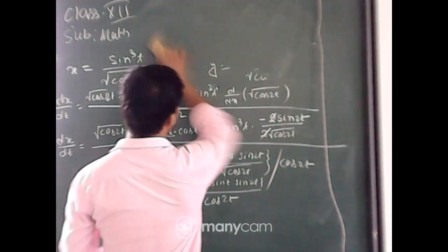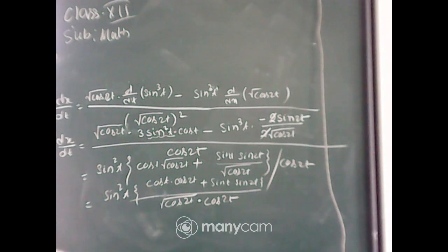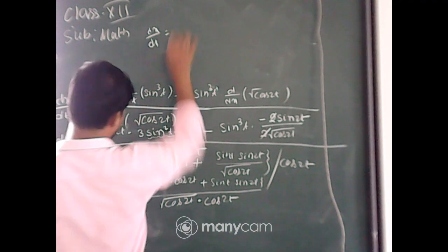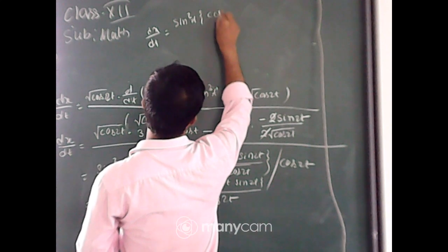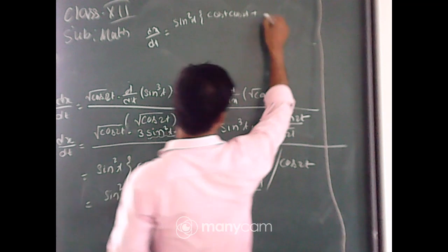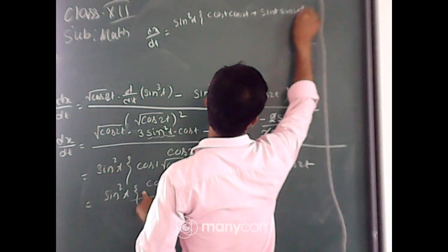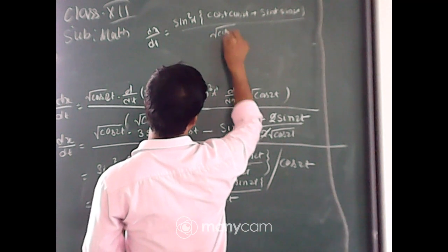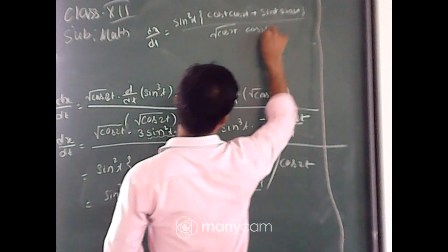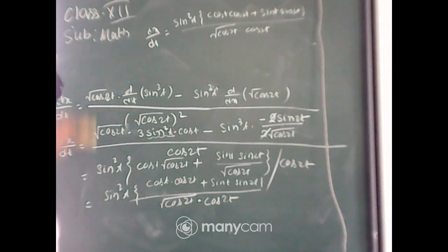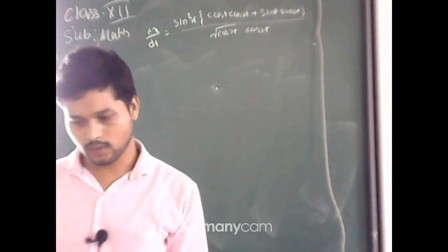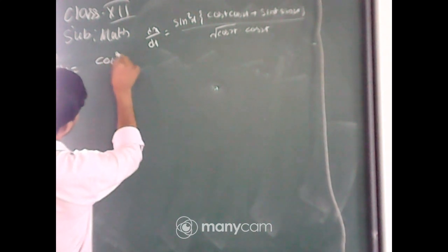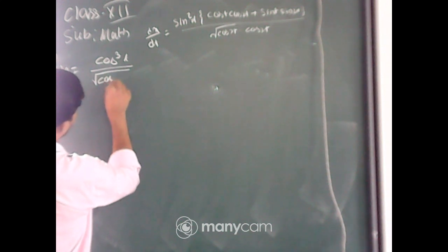Let me write the result here. So dx/dt is equal to sin²t into 3 cos t·cos 2t plus sin t·sin 2t, divided by root over of cos 2t into cos 2t. Now let me rub the board and by a similar way we will differentiate y. So y equals cos³t by root over of cos 2t.